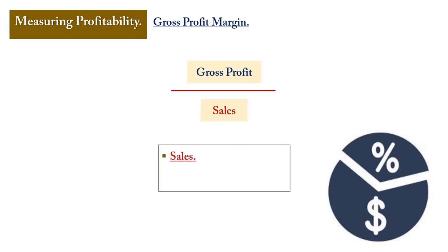Some areas that can explain a change in gross profit margin include sales. For example, if you get 15% this year and 17% last year — a 2% regression — you can look at sales. Probably you did less sales in the current period due to an economic downturn compared to the previous year.